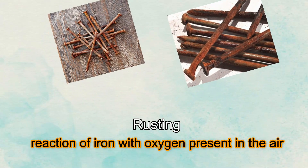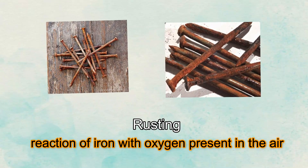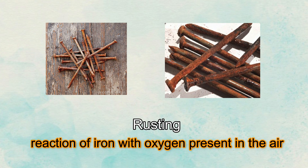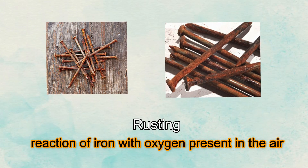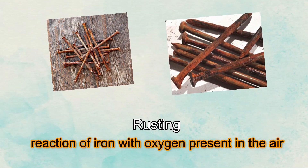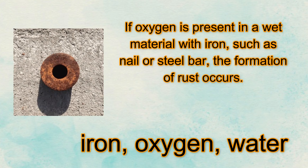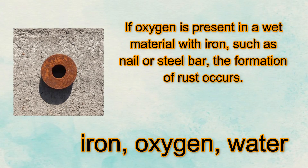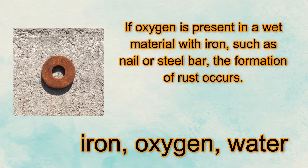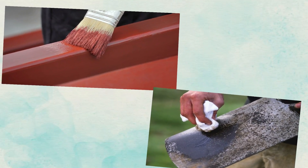You may have observed that some iron nails in your home have rust. Rust is caused by the reaction of iron with oxygen present in the air. This kind of reaction is slower than the rate of combustion. Remember, the amount of rust formed on iron depends on the moisture and humidity of the surroundings. If oxygen is present in a wet material with iron, such as a nail or steel bar, the formation of rust occurs. When iron, oxygen, and water react with one another, rust occurs.